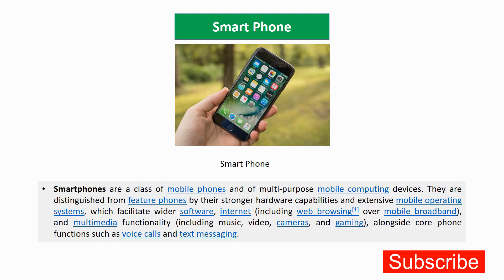Smartphones are also computers. They are a class of multi-purpose mobile computer devices, distinguished from feature phones by stronger hardware capabilities and an extensive mobile operating system. With a smartphone you can browse the internet, download apps, use a camera, play games, make voice calls, send text messages, and use touchscreen features — there are so many functions available.